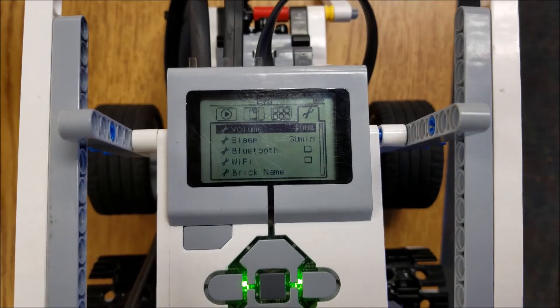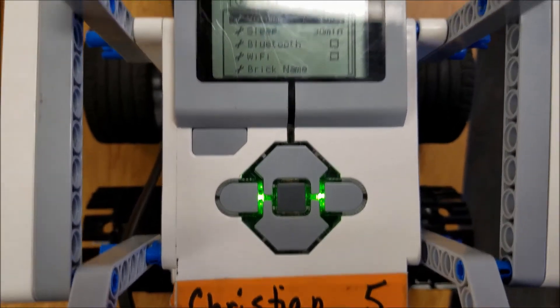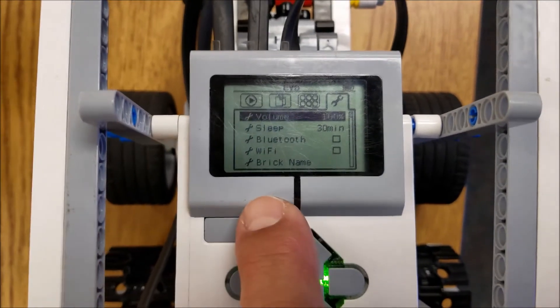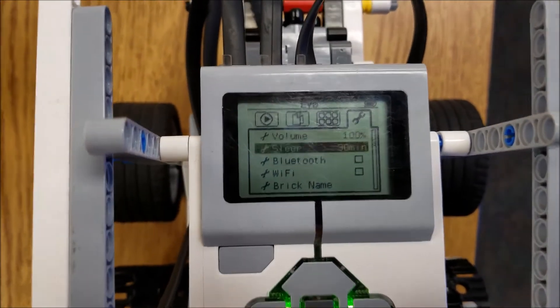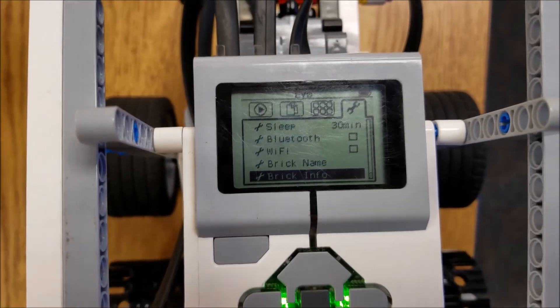Okay everybody, the firmware update is over, and we have the same Christian five brick here. So what you'll now notice is if I scroll down here, the brick name is now an option, and brick info is right below it.